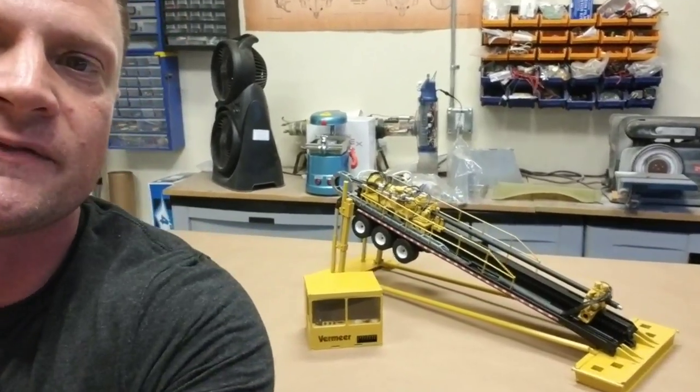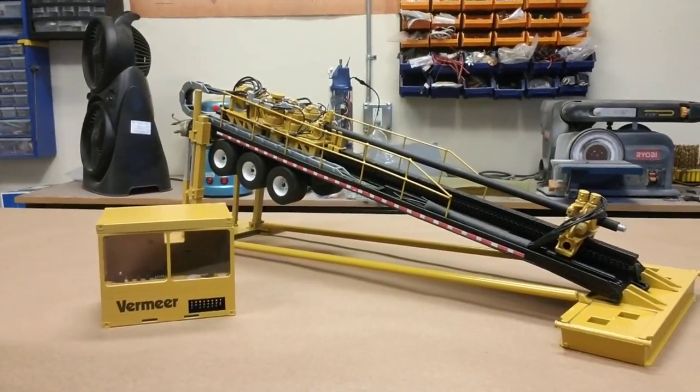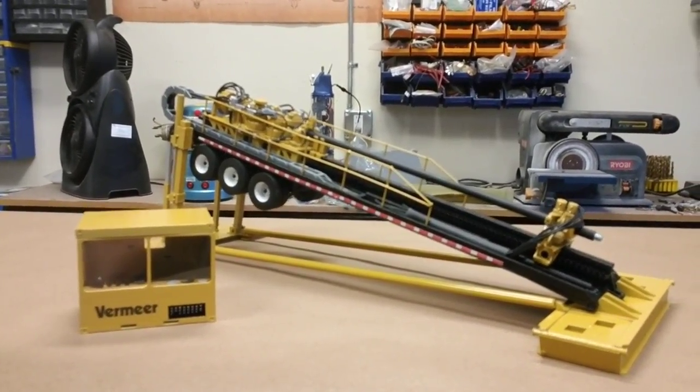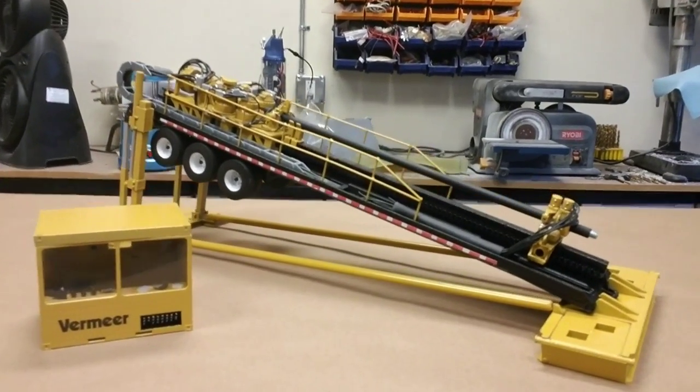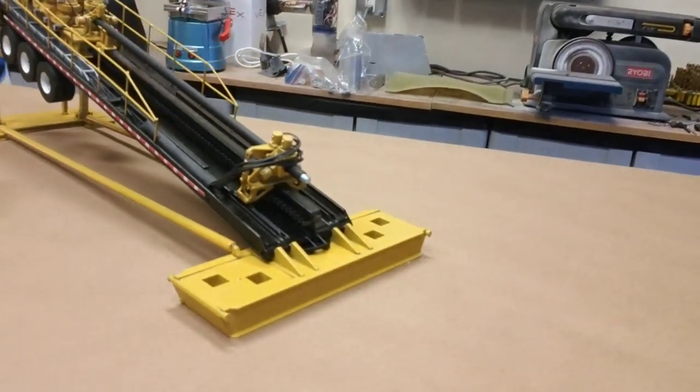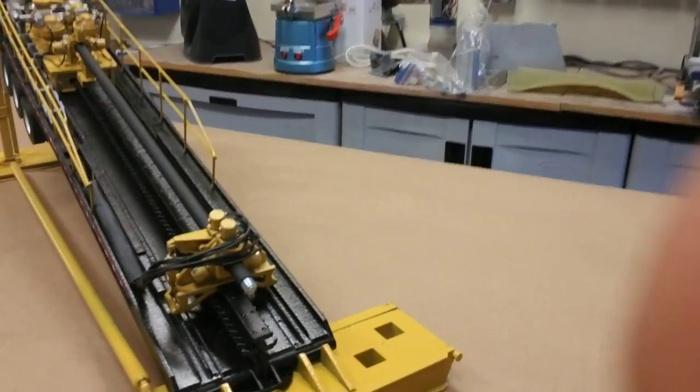Now this is a Vermeer D1000 by 900 maxi drill rig, a horizontal directional drill rig. It's a scale model built off of actual CAD drawings of the machine. You can see I got a lot of detail in here.